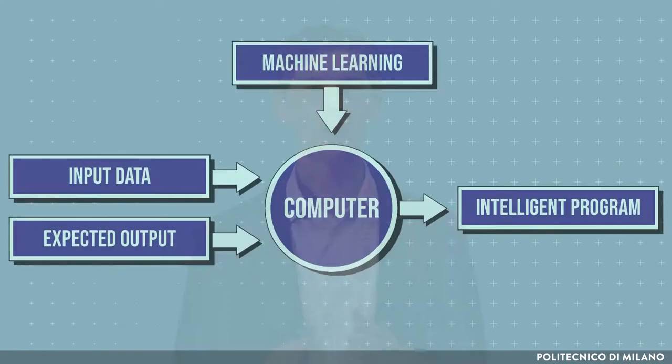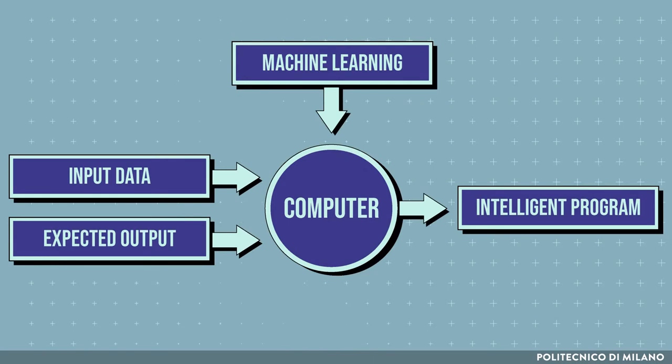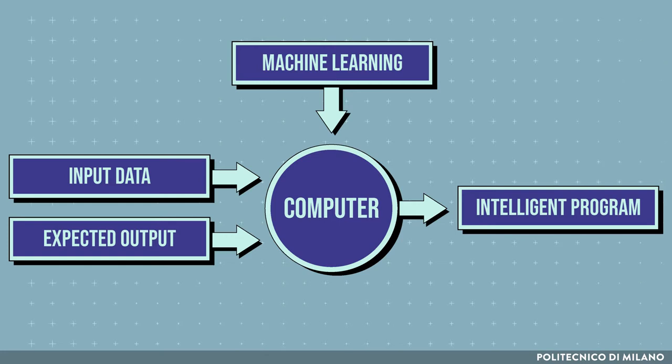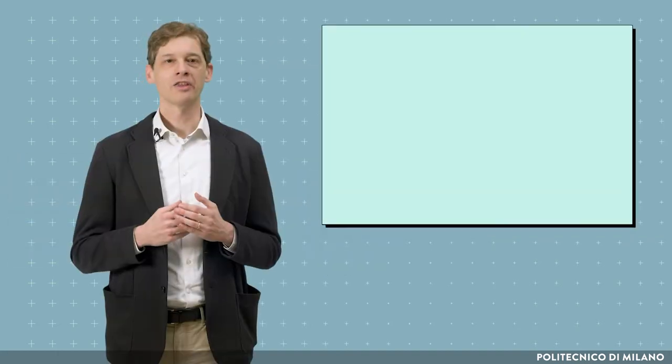Traditionally, programming is a manual process in which a person, the programmer, develops a program that runs on a computer and uses input data to produce the output. In machine learning, this process is overturned to get an automated process. Starting from the input data and the corresponding desired output, machine learning algorithms automatically develop the program. In this way, computers program themselves.